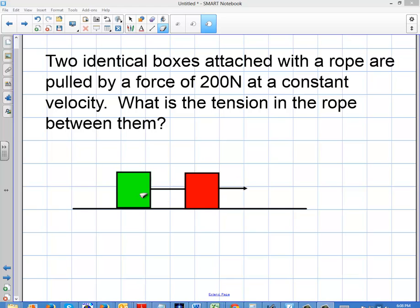So I have the green box here, I have the red box here, and they're both going to have the same mass, whatever that is. So they're just going to have some mass m, they're identical. And I have a rope here, this is a rope.